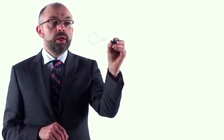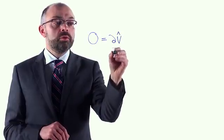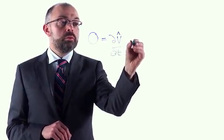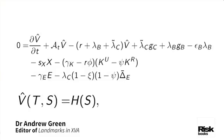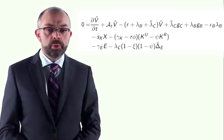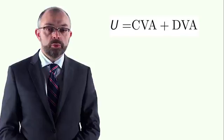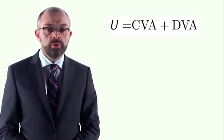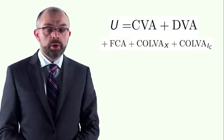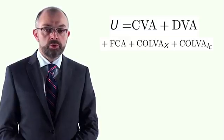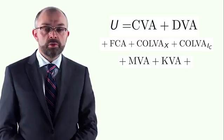To extend this to include XVA, we simply add additional terms to account for the XVA terms. We write down a new expression for the economic value V-hat. What Burgard-Kaier did was to subtract the Black-Scholes-Merton PDE from this PDE to give a PDE for the valuation adjustment U. Once they had obtained a PDE for U, they applied the Feynman-Kac theorem to obtain an expression for the valuation adjustment as a series of integral terms.